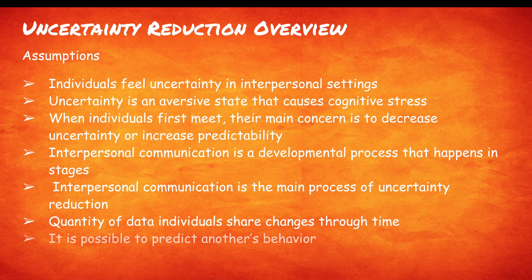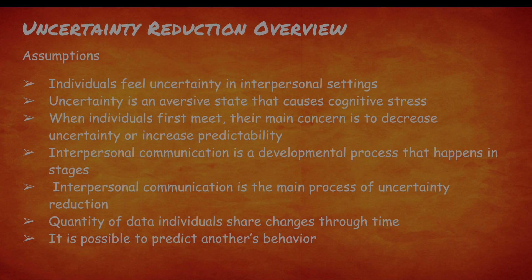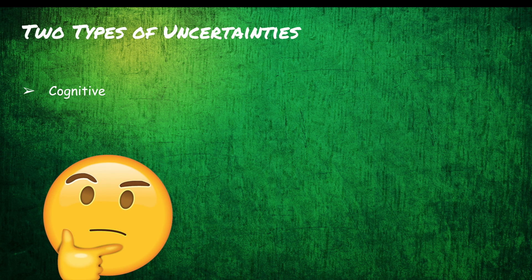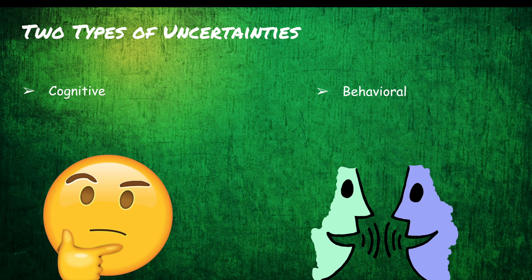The last assumption stated by Turner and West concludes that within URT, you can foretell another's behavior in a law-like fashion. In Uncertainty Reduction Theory, there are two types of uncertainties. The first is cognitive — uncertainty about what another is thinking, which causes stress. The second is behavioral — uncertainty about how this other person might act or respond to you.